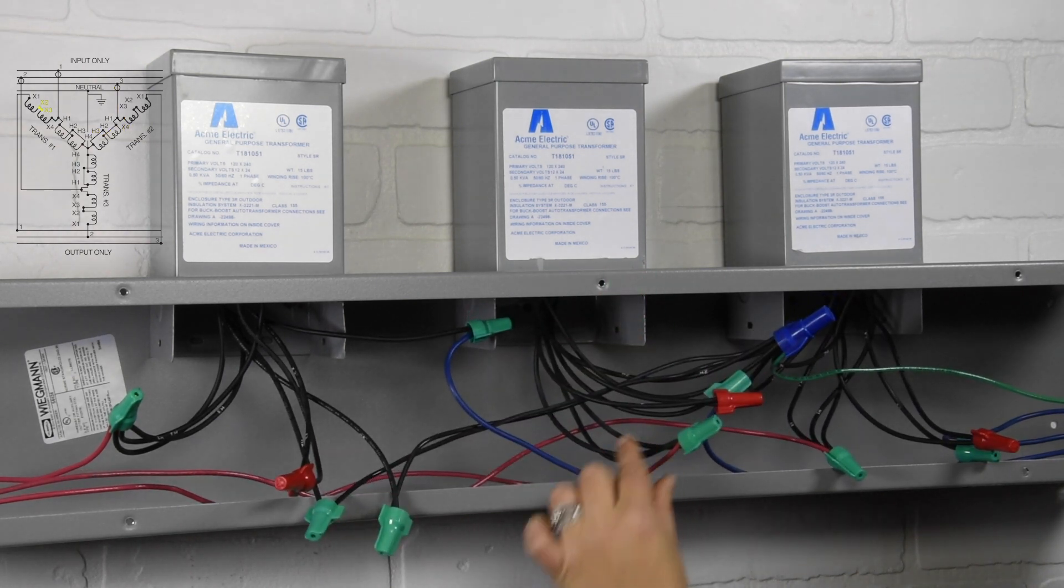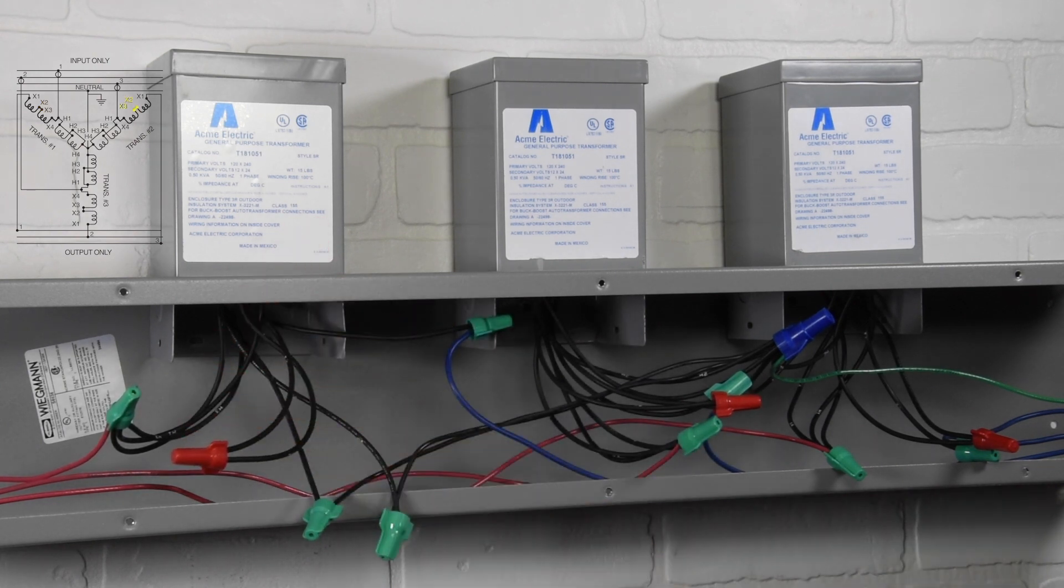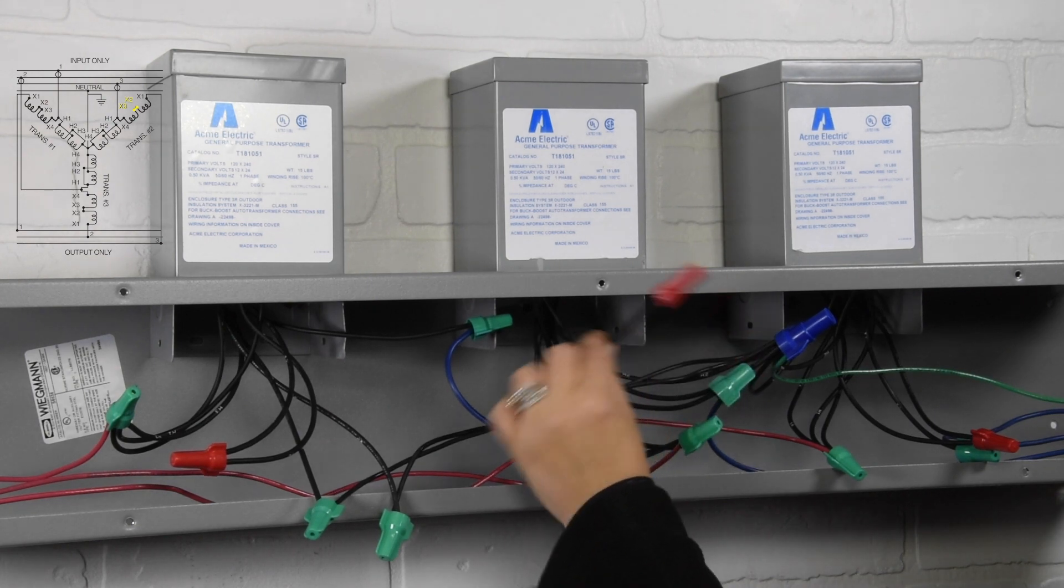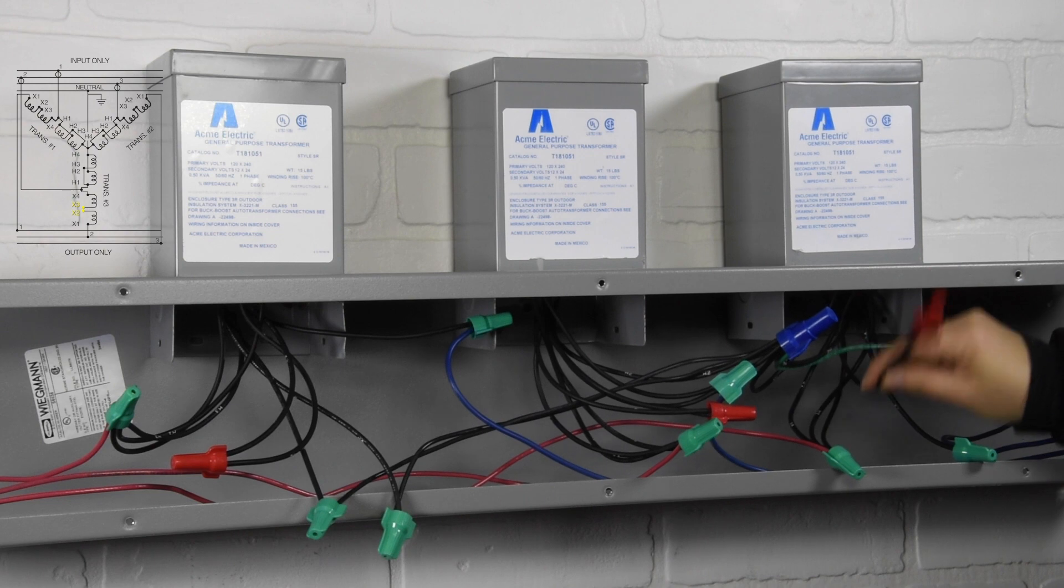Fourth connection: transformer 1 wires X2 to X3. Fifth connection: transformer 2 wires X2 to X3. Sixth connection: transformer 3 wires X2 to X3.